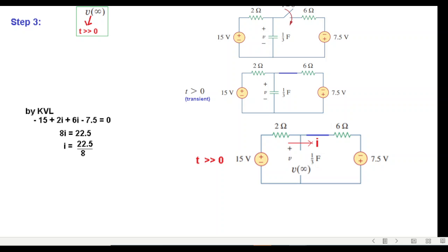Now to find v or v(∞), we will use this left loop. You could also use the right loop - you will get the same answer. The left loop: -15 + 2i + v = 0. Plugging in the value of i and solving, we get v = 9.375. This is our v(∞), so v(∞) = 9.375V.